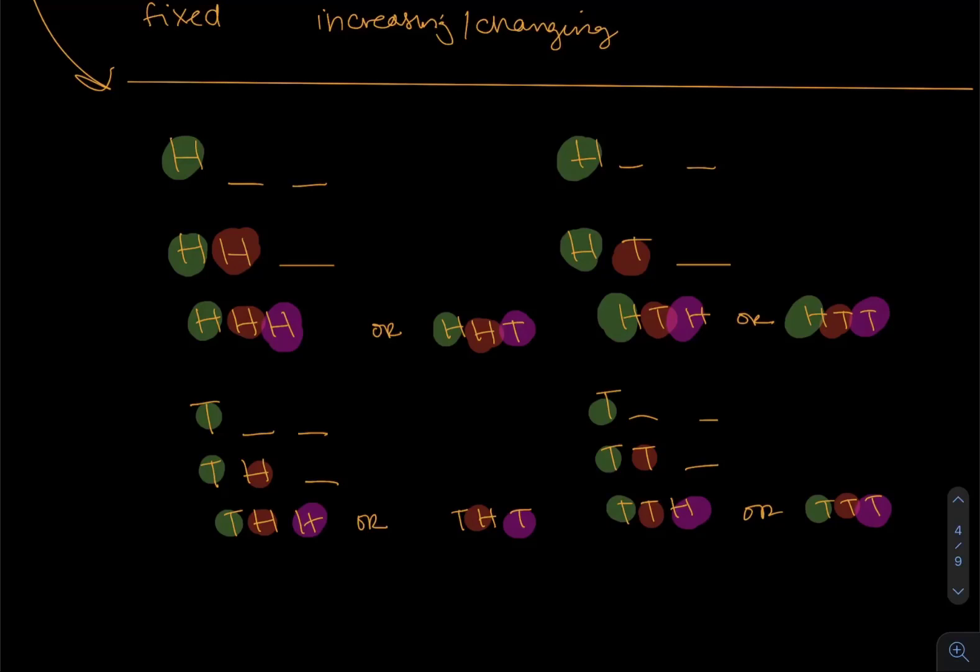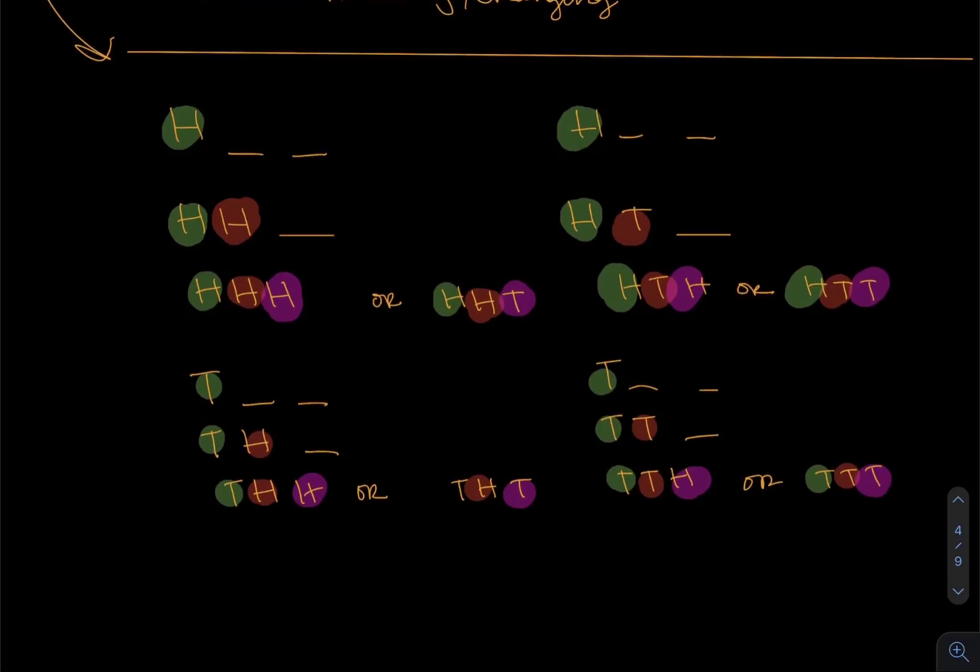So again, by fixing the first spot and running through the second, running through the third, you follow the same idea as an odometer. Instead of digits, this time we have letters representing heads and tails, H for heads, T for tails.